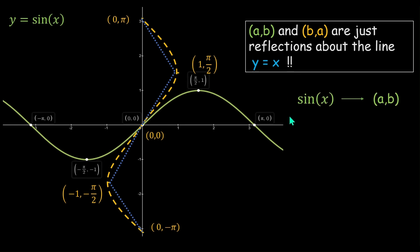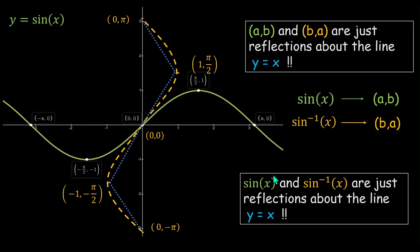If for sin x every point is of the form (a, b), then for sin⁻¹x every point is of the form (b, a). By virtue of this property, it simply means that the entire curve y = sin x and the entire curve y = sin⁻¹x are just reflections of each other about the line y = x. This makes our job really easier — we just construct y = x and reflect y = sin x about it.